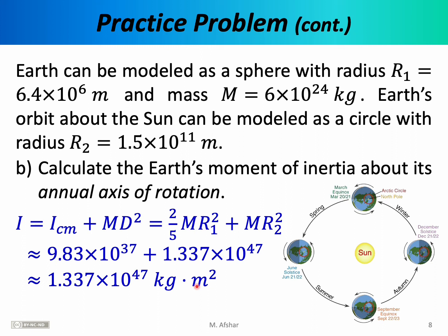Notice that when doing the calculations, the moment of inertia relative to the center of mass is a very small number compared to md². Certainly 9.83 × 10³⁷ is a big number, but compared to the second term it's quite small. The second number is on the order of 10⁴⁷ — approximately 10 orders of magnitude, or 10 billion times, bigger.